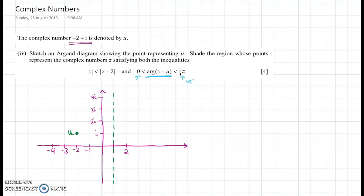So we'll be looking for the 45 degree angle line. z minus u means everything from u to z is going to have an angle of between zero and 45 degrees. So that means if we start at u and we draw the horizontal from u, because we always measure our argument from the horizontal line.